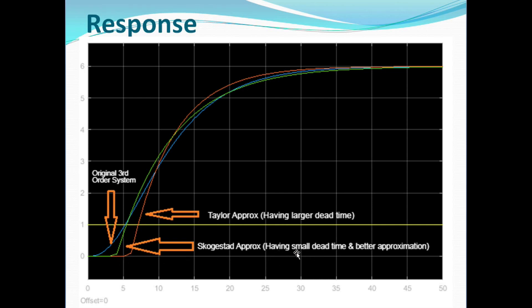The Skogestad approximation has a smaller dead time, and this approximation is comparatively better than the Taylor approximation. From the response graph you can easily comment that the Taylor approximation has a larger dead time than Skogestad's half rule. Skogestad's approximation has a smaller dead time and its output is quite similar and tracks the original system better. It deviates very much less from the original system compared to the Taylor approximation. These are the conclusions we can make from this response.